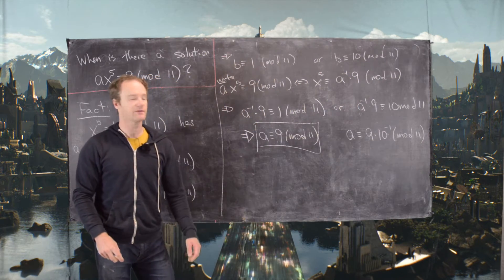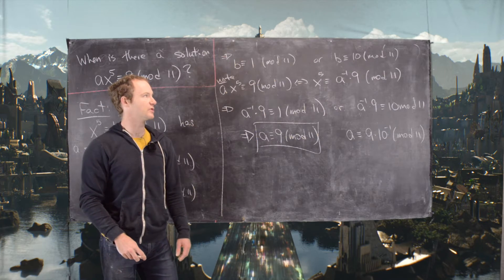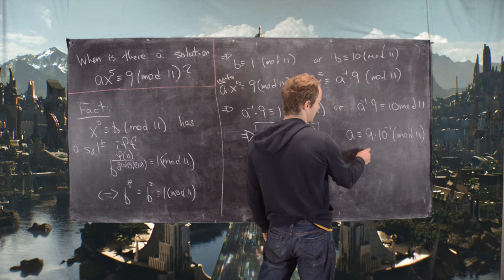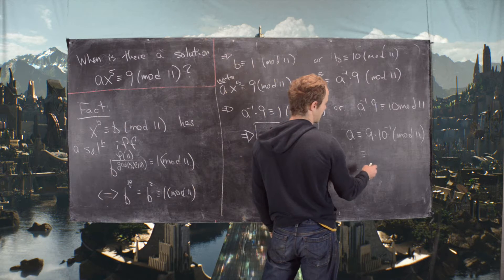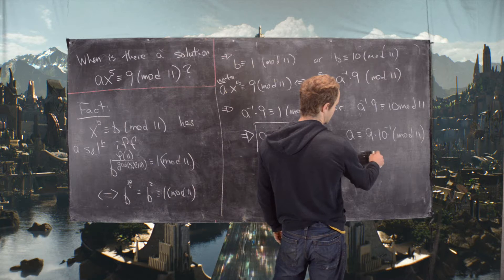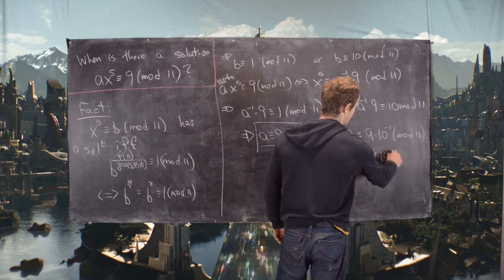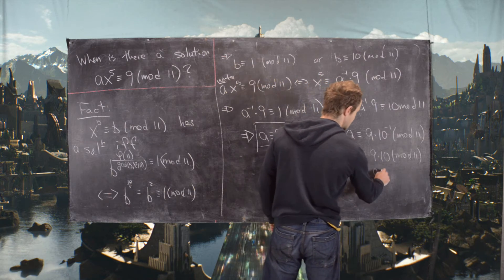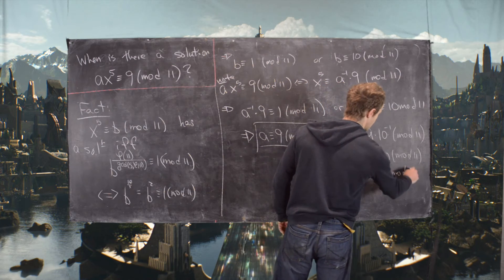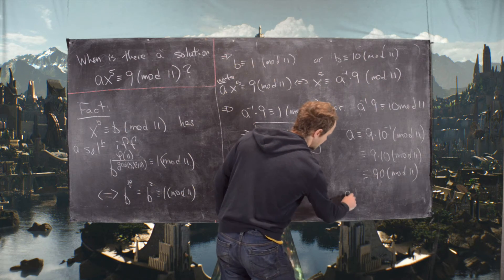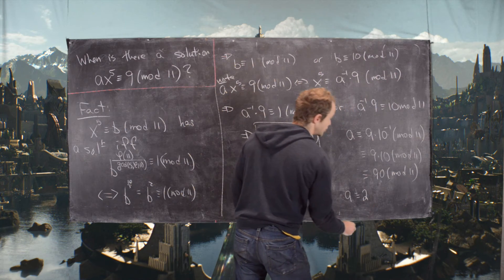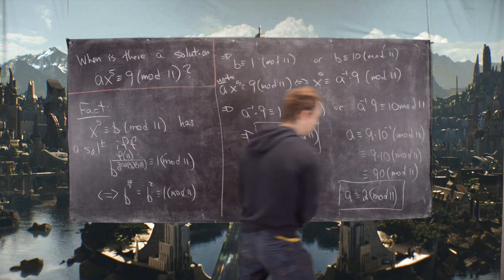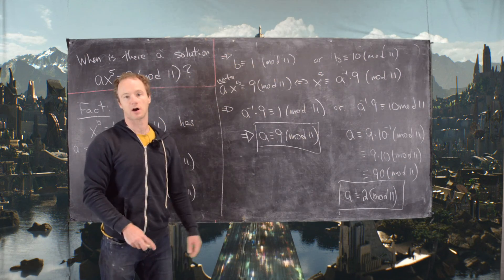But using negative numbers, 10 is the same thing as -1, which makes 10 its own inverse. So that means this is the same thing as 9 · 10 (mod 11), which is 90 (mod 11), which finally gives us A ≡ 2 (mod 11), because 90 is 2 more than 88. So there are two solutions.